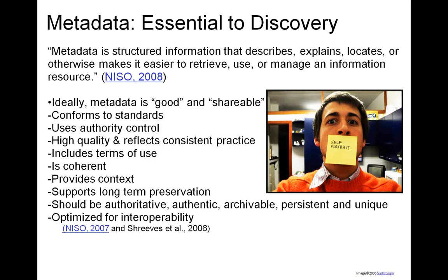The information in institutional repositories could vary from peer-reviewed journal content to grey literature like PowerPoint presentations or working papers, student research such as theses or honors papers, as well as other scholarship and creative outputs. Ideally, the descriptive metadata created for these resources is good and shareable, as outlined by NISO and Sarah Shreves and co-authors. Good and shareable metadata conforms to a set of standards, uses authority control, and is of high quality reflecting consistent application and practice.